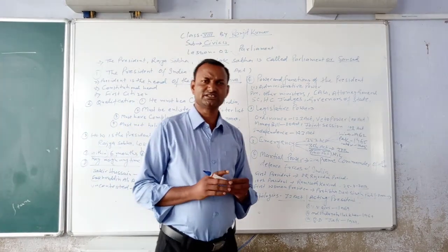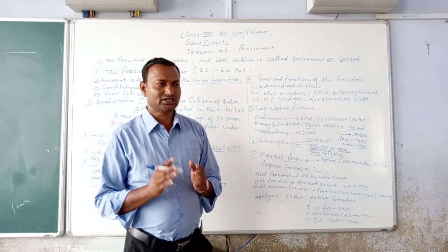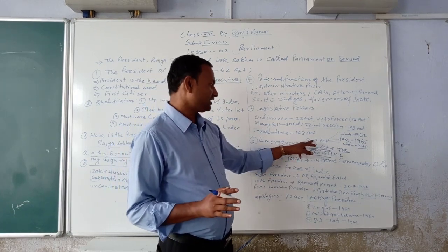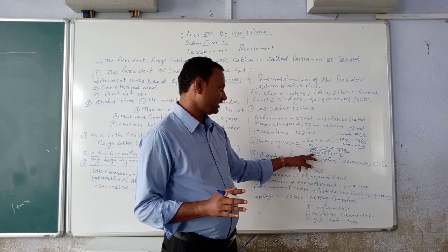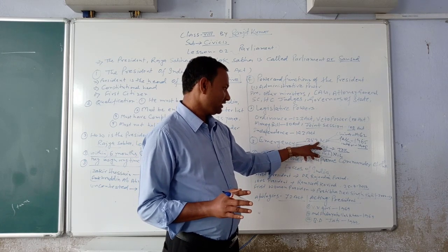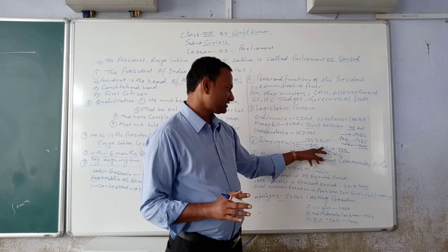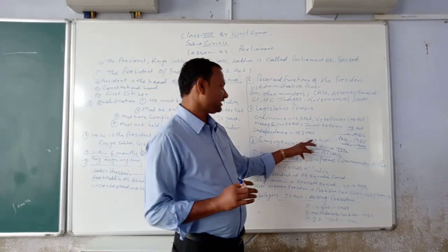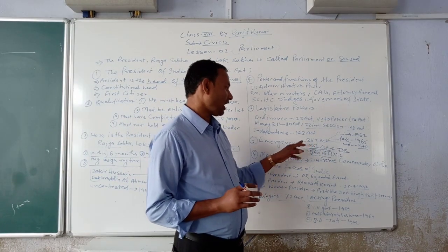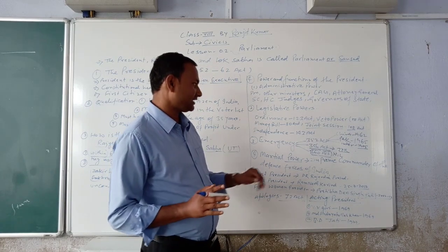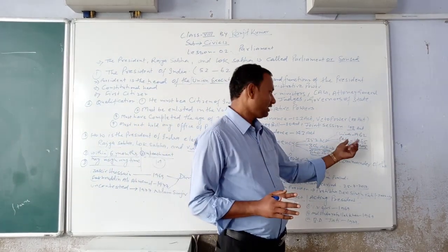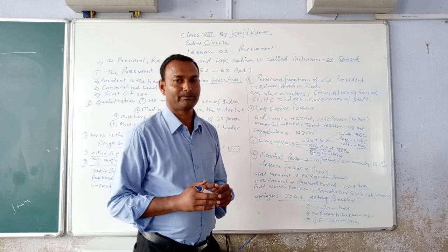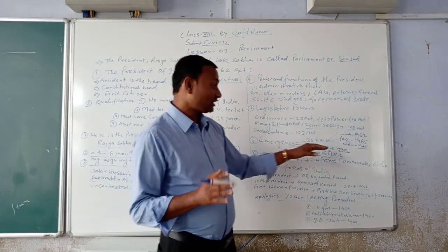Next: Emergency. In the Indian Constitution there are three types of emergency provisions. Article 352 is National Emergency. Article 356 is President's Rule. And Article 360 is Financial Emergency. Article 352 National Emergency has been imposed three times: first in 1962 during the China war, second in 1965 during the Pakistan war, and third in 1975 which was an Internal Emergency.